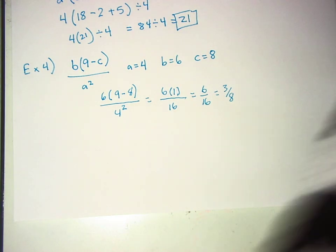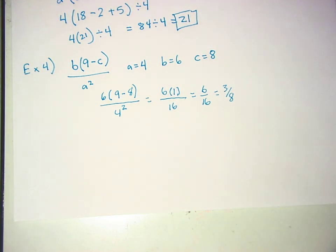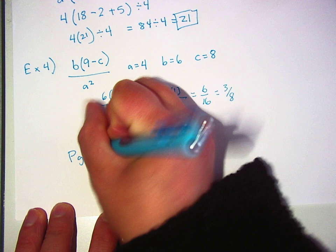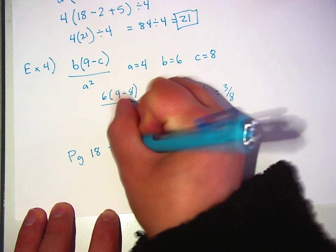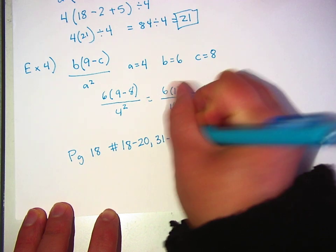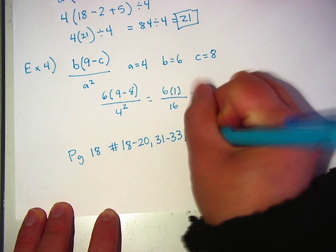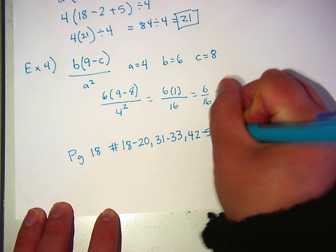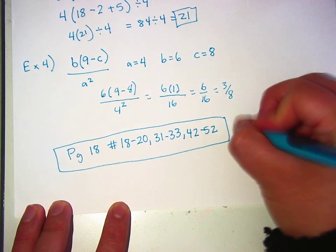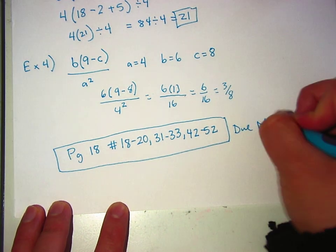Remember, we're going to start off slow, but we will ramp up. All right. Homework page 18, numbers 18 through 20, 31 through 33, and 42 through 52. So let me make something very clear. This assignment is due Monday.